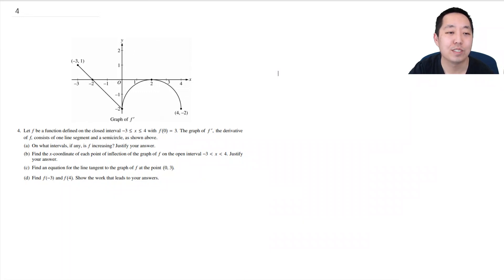Hi all, this is Alan with Bothell STEM Coach and today we're looking at the fourth free response question in the AP Calculus 2003 AP exam. Let f be a function defined on the closed interval negative 3 to 4 with f of 0 equal to 3. The graph f prime, the derivative of f, is one line segment and a semicircle.